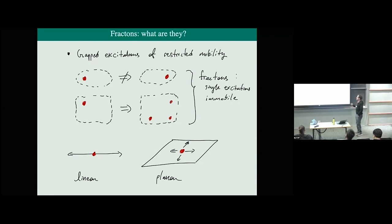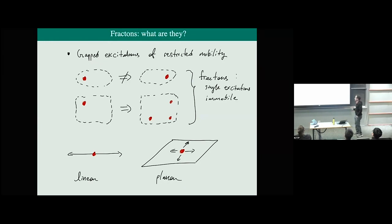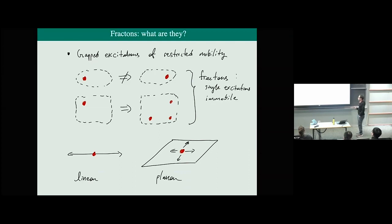In fracton phases, there are gapped excitations of restricted mobility. That means if I have an excitation here and I would like to get it to this point in space, there is no local process by which I can accomplish that. It's not even just a matter of energy conservation — there's simply no local operator that you can act with in this oval-shaped region that will destroy this excitation and recreate it over there.